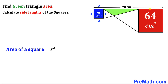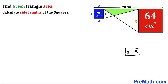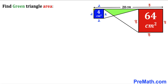Now let's focus on the red square, whose area is 64 cm². Substituting into the formula: 64 = s². Taking the square root on both sides, the side length s turns out to be 8 cm. So the side length of the red square is 8 cm.